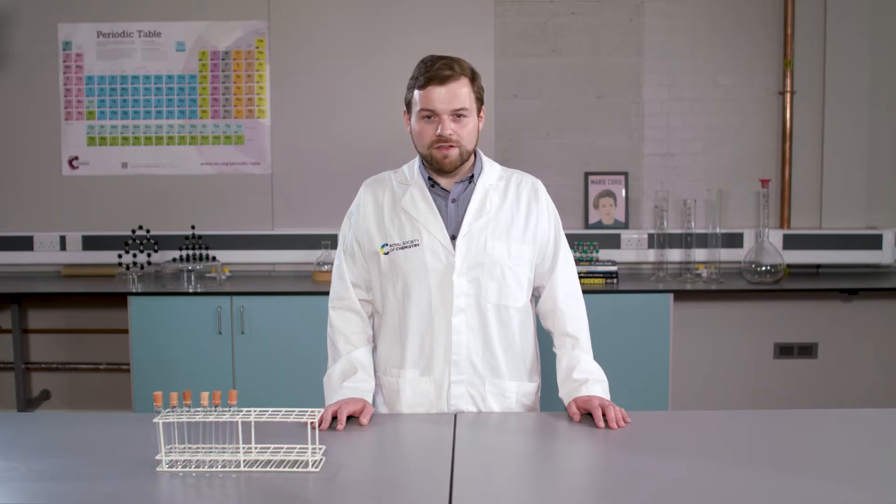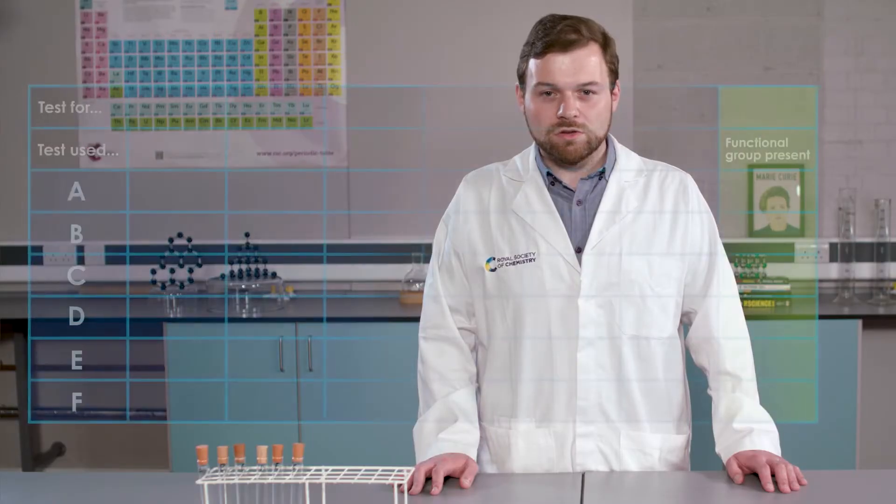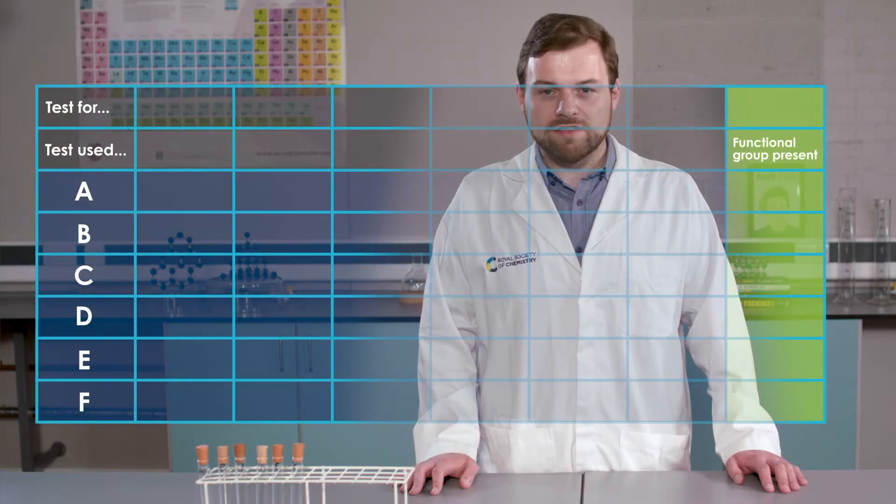In some cases, we will be able to identify the functional groups present from just one test. However, for others, we will need a second test to confirm the result. When carrying out investigations of this type, it is incredibly important to be systematic and to make sure everything is clearly labelled and you record all of your results as you go along. You will need to spend some time planning the order of these tests, as this will save you time later.